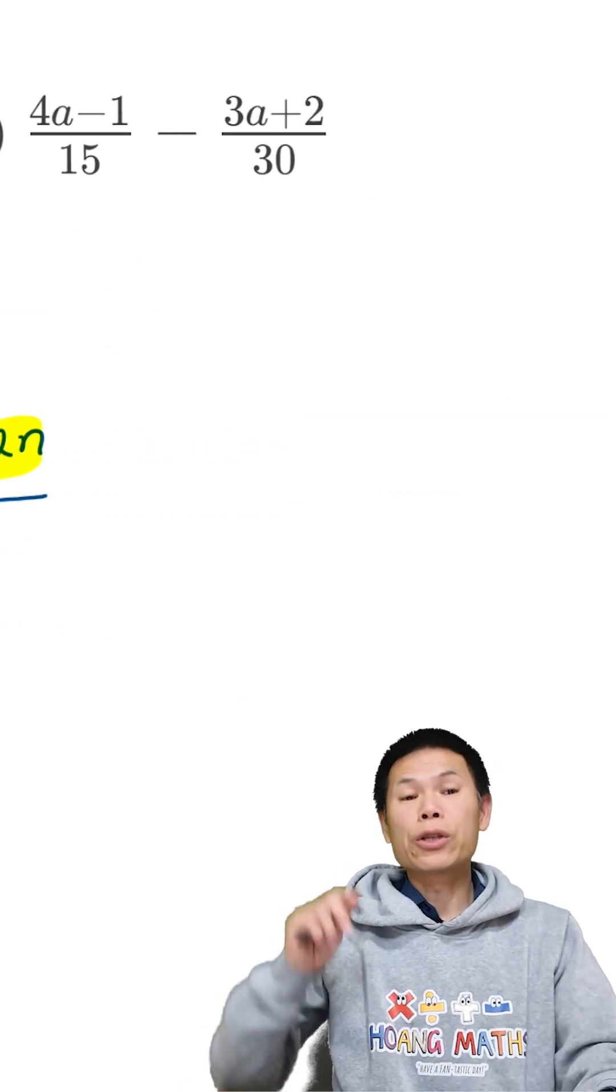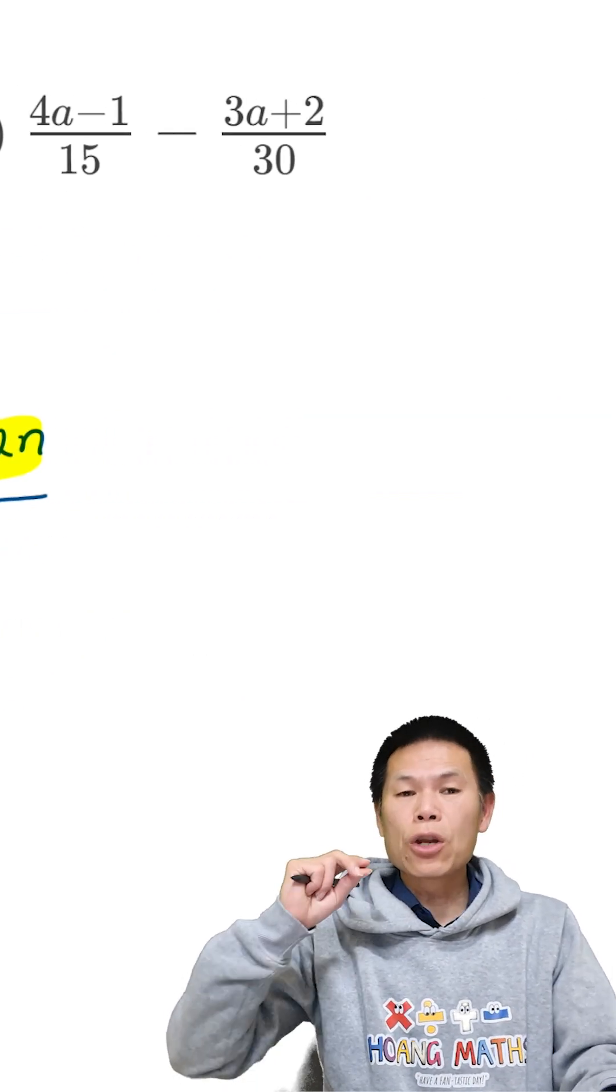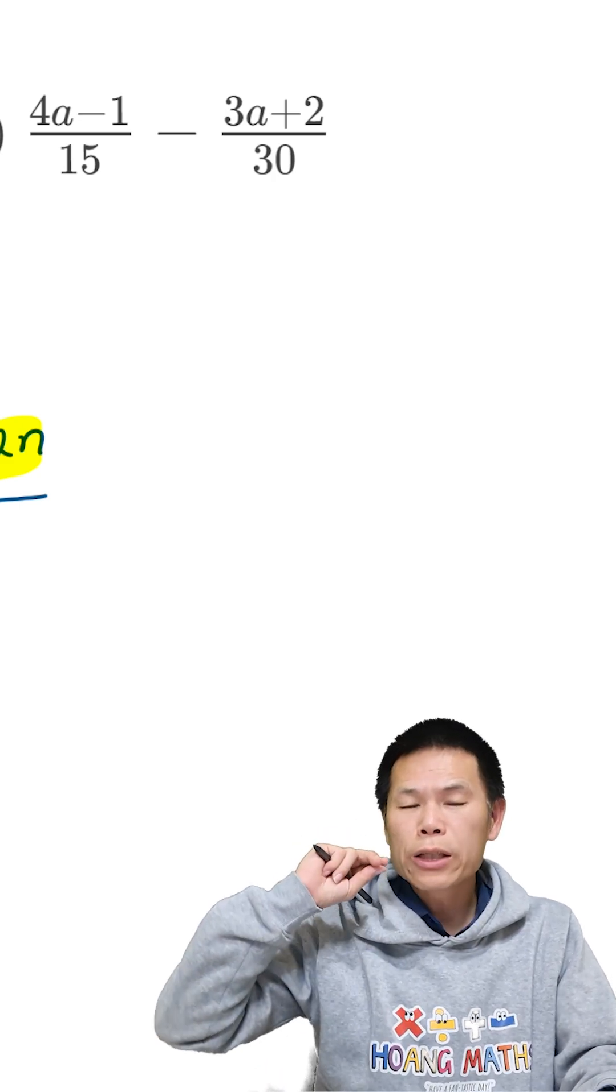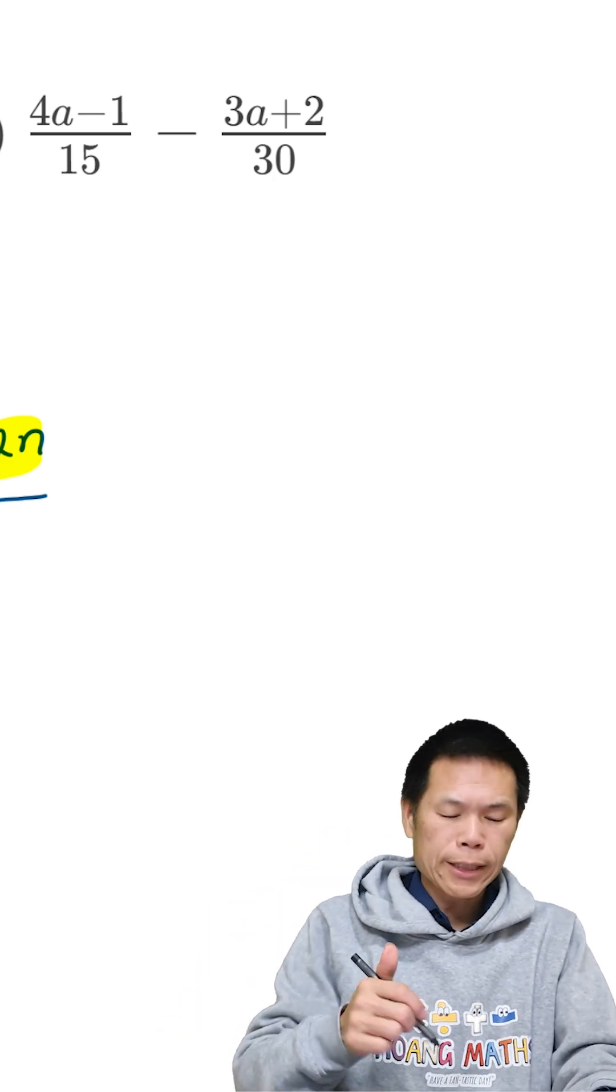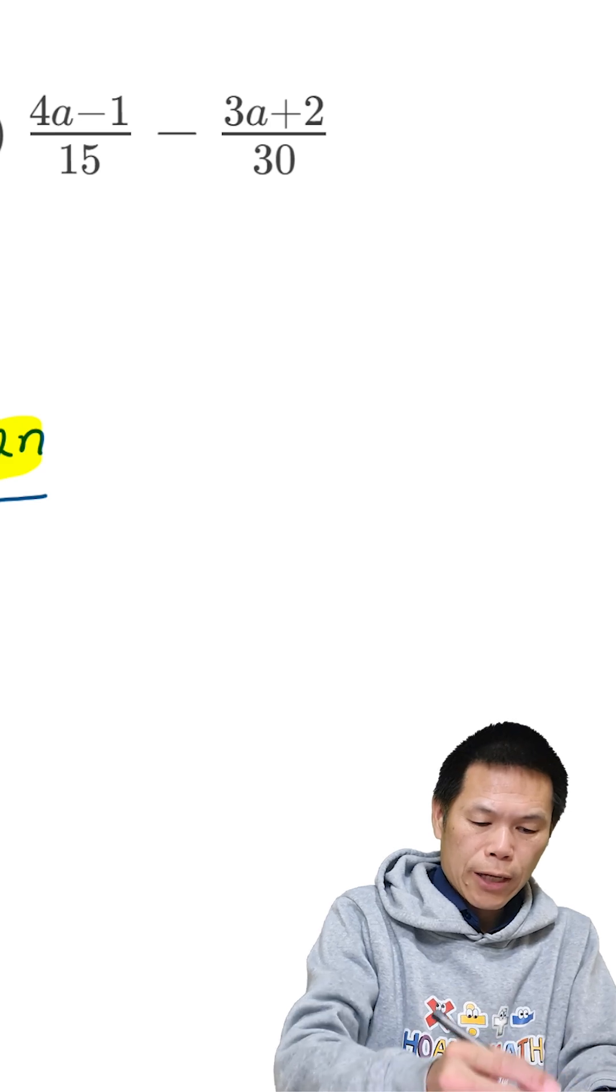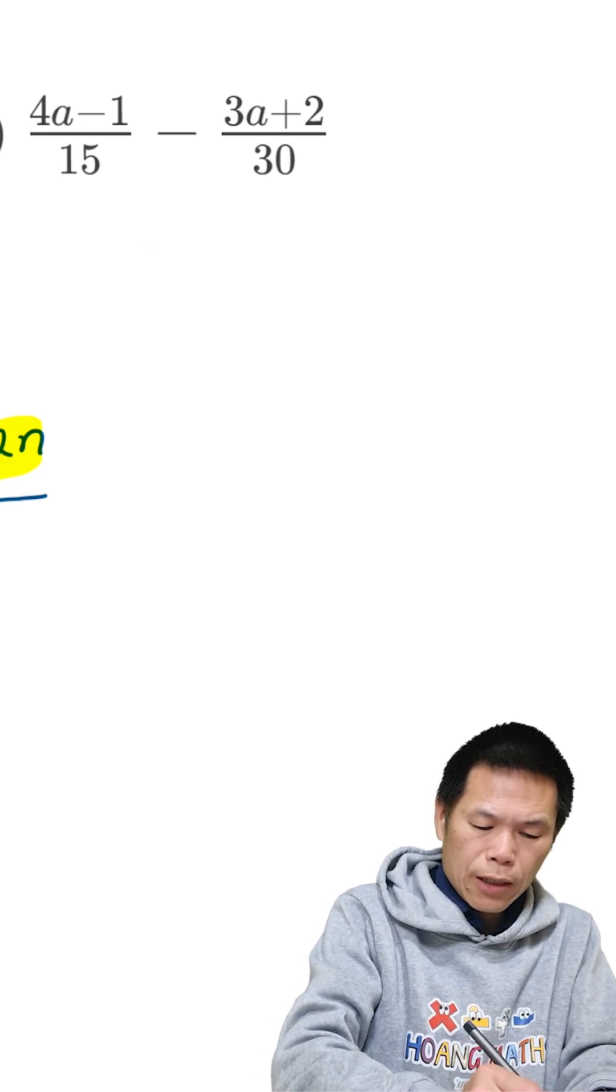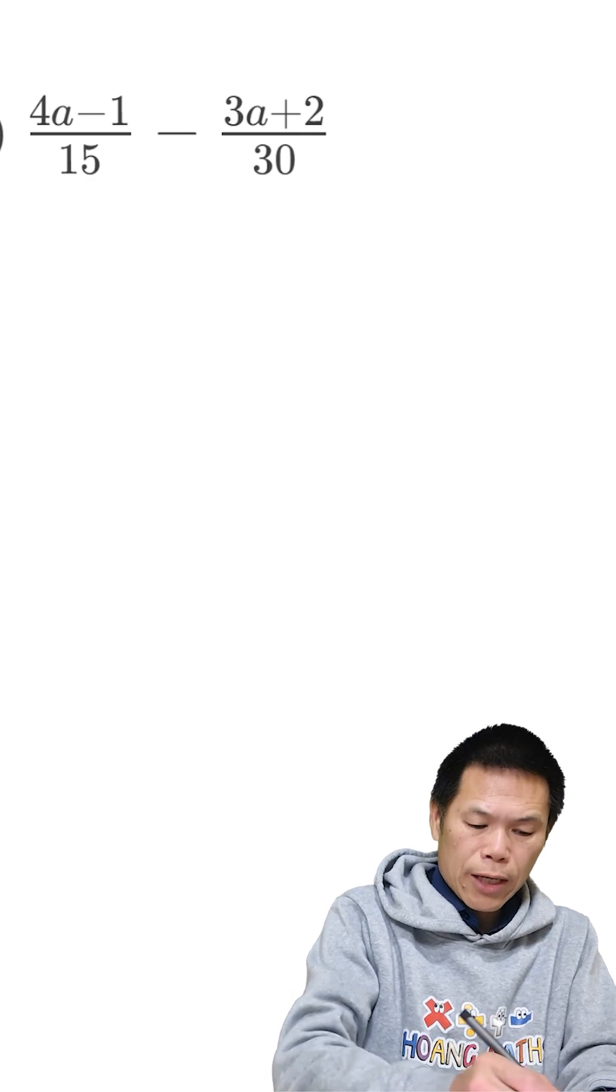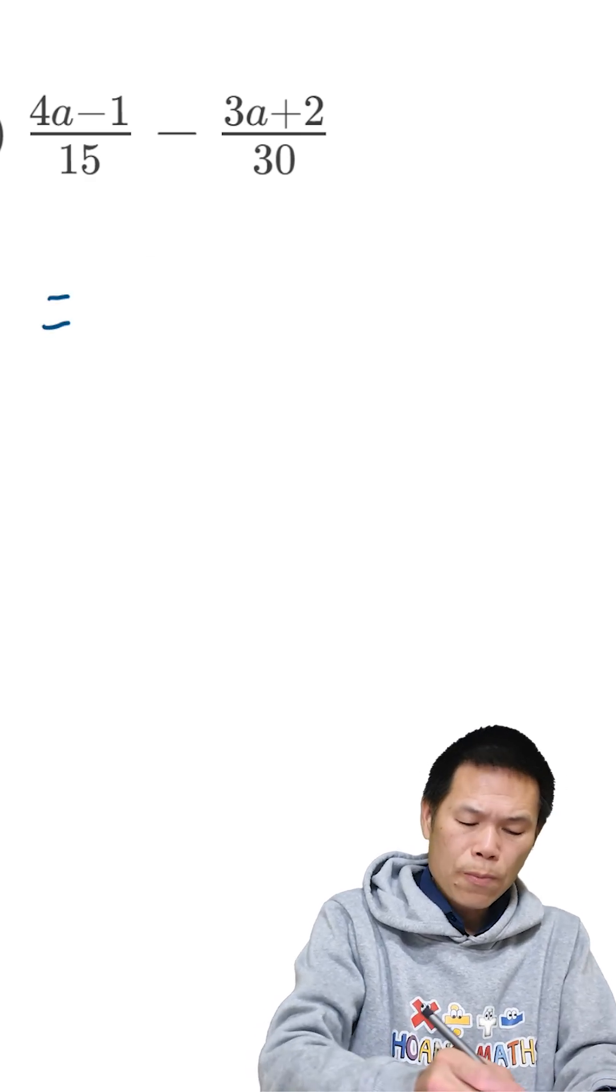Part J. So 30 and 15, the lowest common multiple is 30. In other words, the lowest common denominator is 30. So I'll just write here, let me just clear this first. Okay, so right here, that is equal to 30.